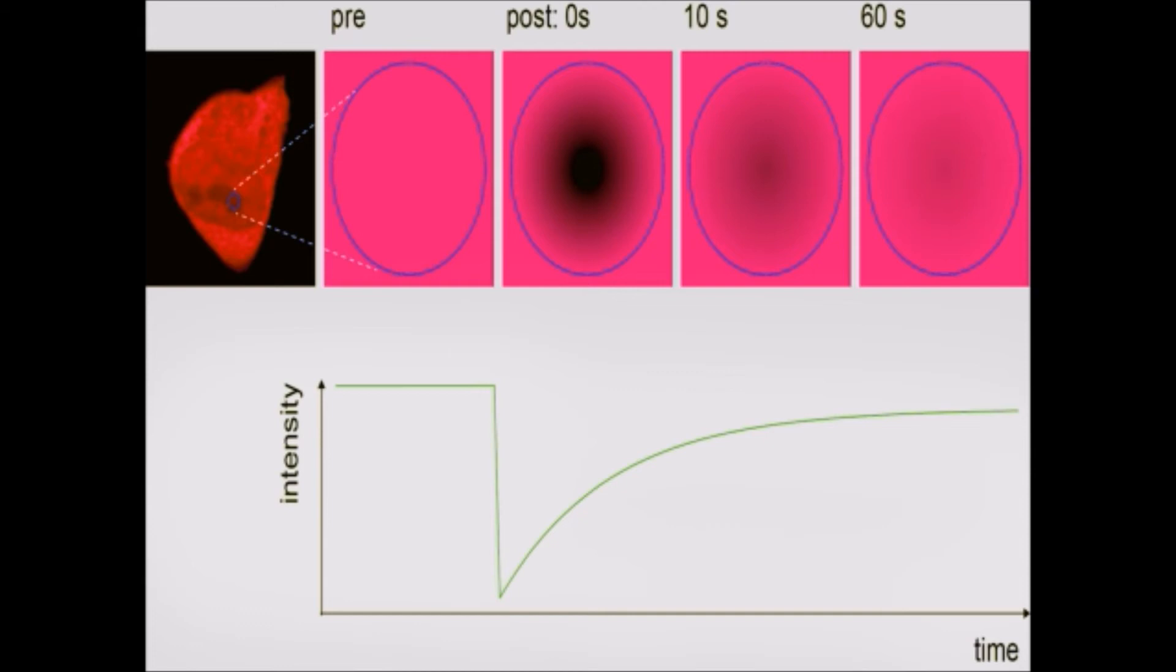And after that we will leave it to freely diffuse in the media. So when it will diffuse freely, at that time what will happen is we will have the recovery of the fluorescence. And so this graph represents the fluorescence.